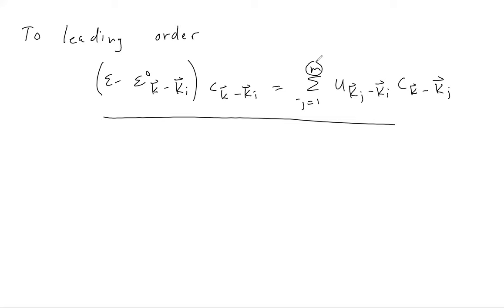To make this more concrete, in the next mini-lecture we're going to consider how this plays out for just two levels contributing to the degenerate set. We'll talk about just the case where there are two degenerate levels far from all other levels, ask what coupling to the periodic potential does, and see that it gives a bandgap. It will look like a very familiar problem from quantum mechanics, and there's a very nice physical interpretation for what happens to the electronic wave functions in this case.